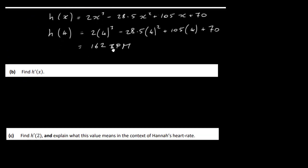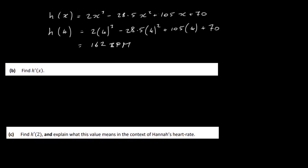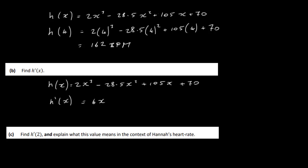That's the first part done. Now let's look at the second part: find h prime of x. All you've got to do is differentiate the function. Our h of x is 2x cubed minus 28.5x squared plus 105x plus 70. When we differentiate, we bring the power down and multiply, giving us 6x squared minus 57x plus 105.